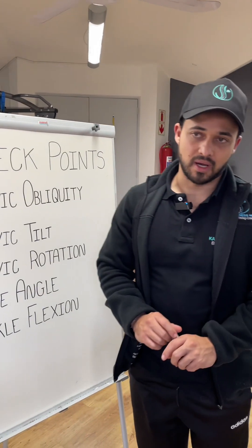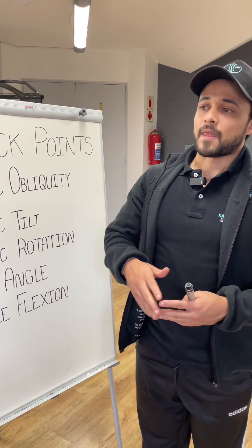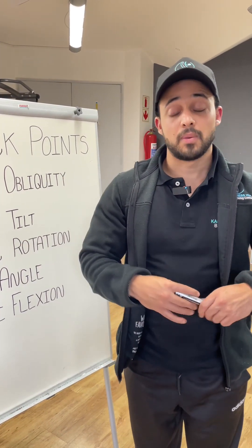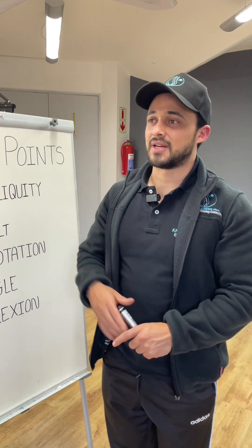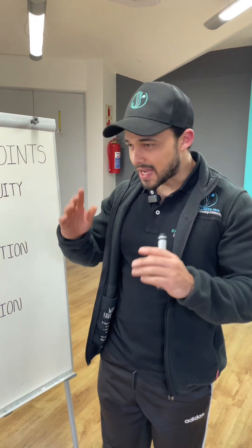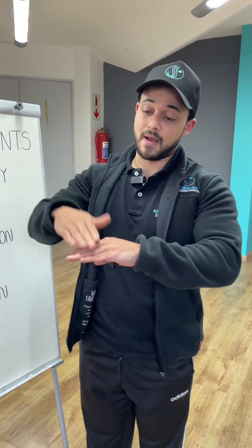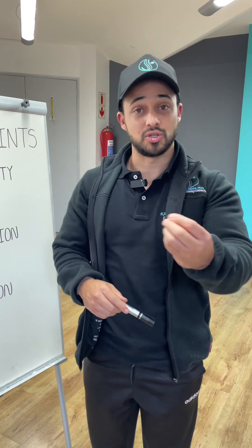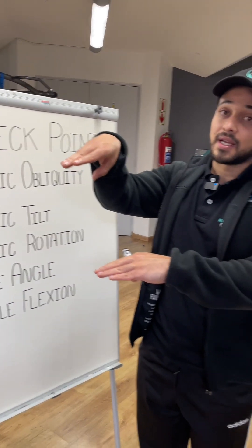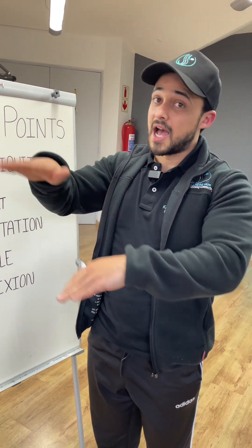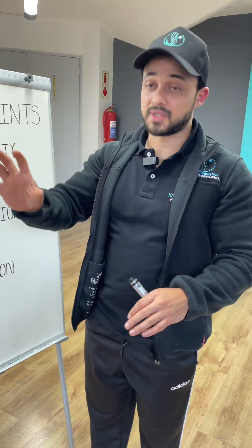The last checkpoint is ankle flexion. Most people run heel-to-toe because of overly cushioned running shoes. However, if you take your shoes off, you will not naturally run heel-to-toe — it would be very painful — and you'll naturally run more mid-foot, which is how we should run. Ankle flexion means your foot should be slightly flexed on landing to make contact with the mid-foot, not dorsiflexed, as dorsiflexion indicates your biomechanics is out.